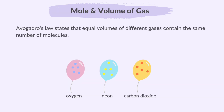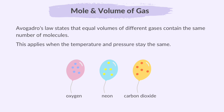Avogadro's law states that equal volumes of different gases contain the same number of molecules. This applies when the temperature and pressure stay the same. In simpler terms, if you have three containers of gas at the same temperature and pressure with the same volume, they will contain the same number of gas molecules, regardless of the type of gas. Avogadro's law helps calculate gas volumes in reactions.